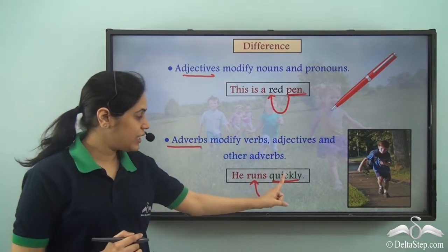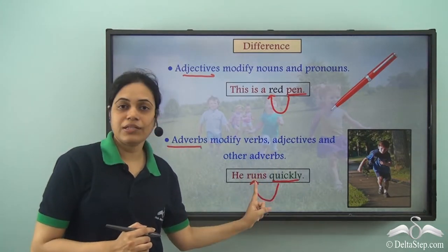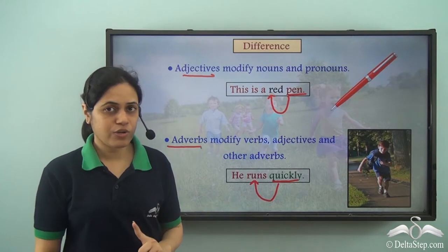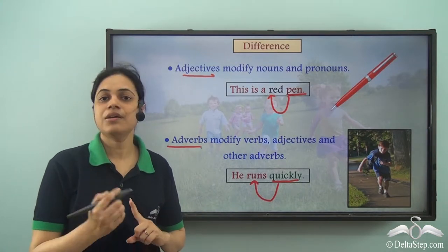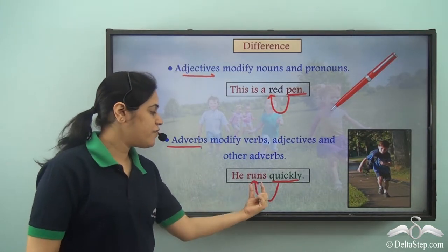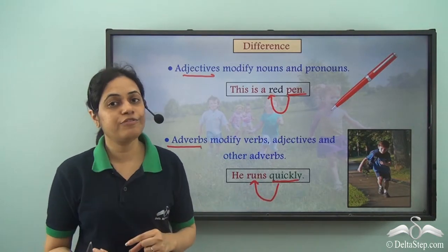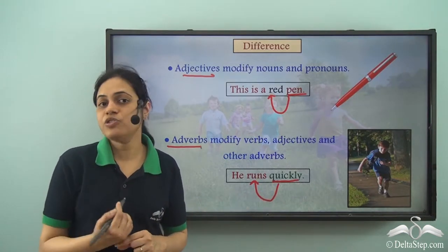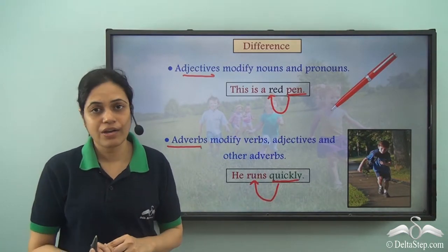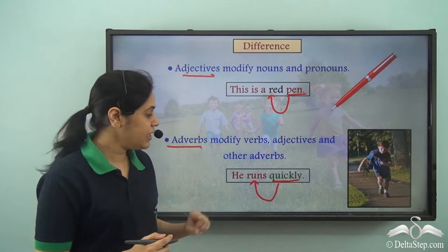So quickly is describing runs. We ask a question to the verb: How does he run? He runs quickly. That is how we identify an adverb — by asking a question to the verb.